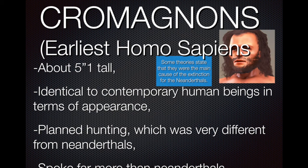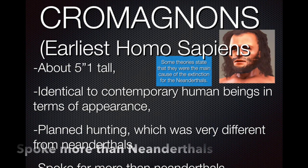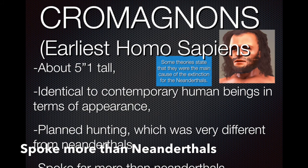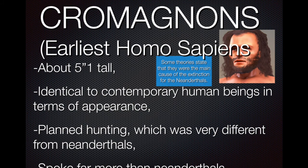Finally, Cro-Magnon — the earliest type of Homo sapiens. They were about five feet tall and looked very similar to human beings today. They spoke more than Neanderthals, which may be another reason why Neanderthals died out. Homo sapiens were able to communicate and plan their hunting, which made it easier for them to catch prey.